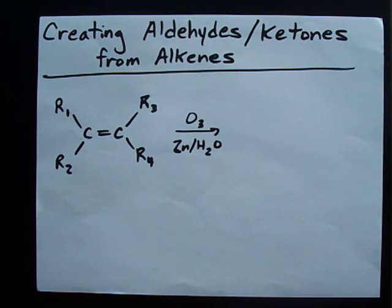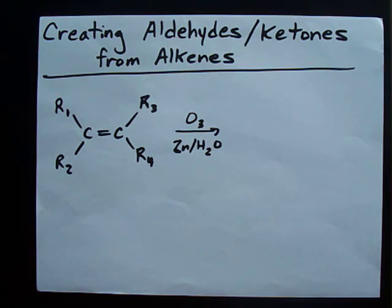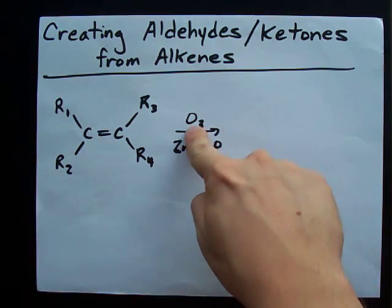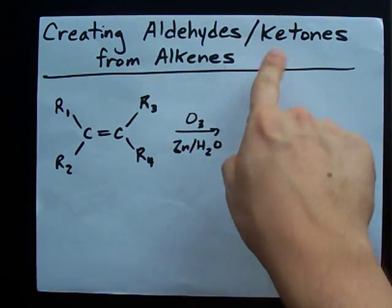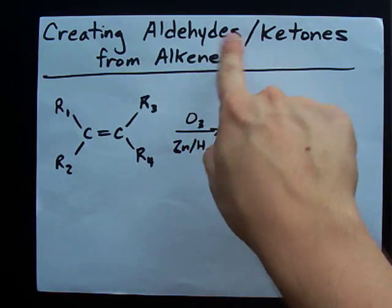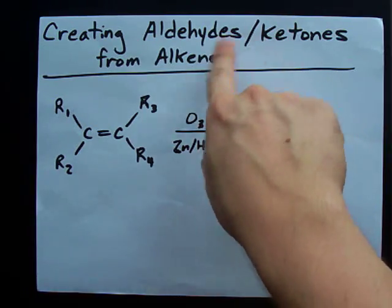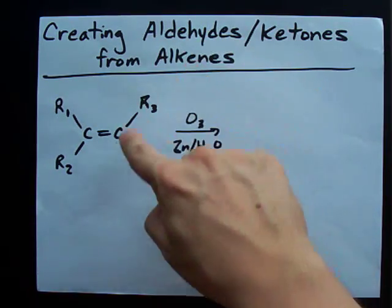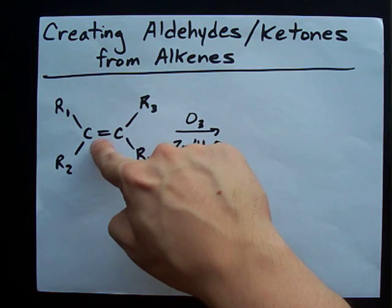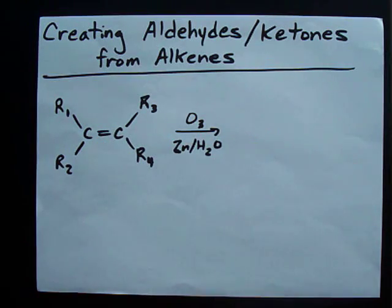You guys want to see the most baller chemical reaction I've ever seen in my life? It's this one, where you use ozone to create an aldehyde or ketone — or one of each, or two of one — from alkenes, where you have a double bond between two carbon atoms.